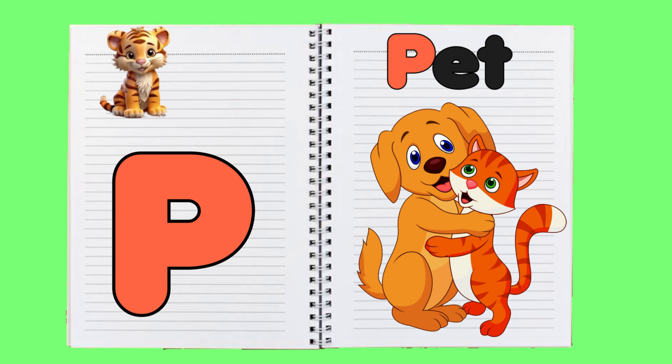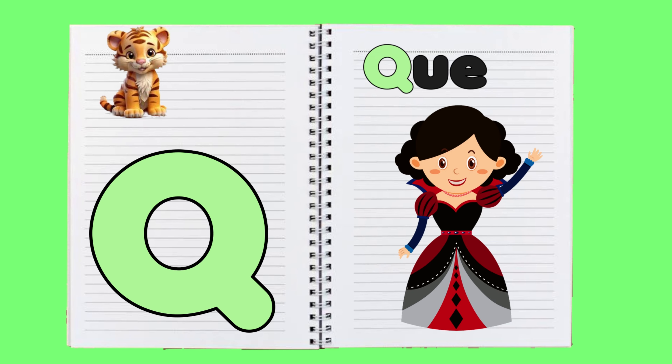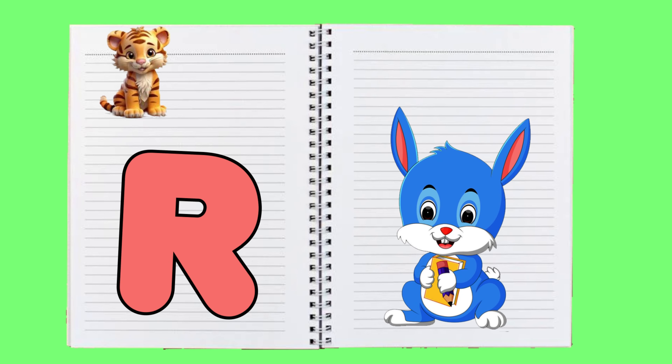Q is for queen, q-q-queen. R is for rabbit, r-r-rabbit.